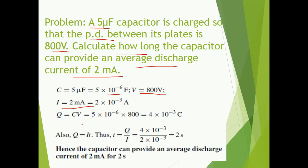First, we need to calculate the value of Q, that is charge. Also, we know that Q is equal to I into T. We need to calculate the time period — that means how long. The time period comes out to be Q by I, which is 2 seconds. Hence, the capacitor can provide an average discharge current of 2 milliampere for 2 seconds.